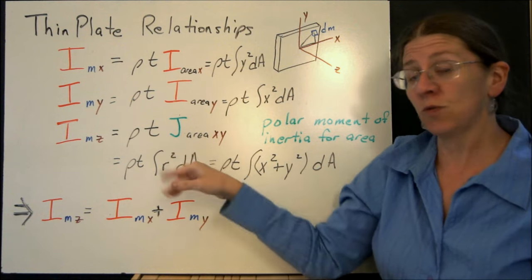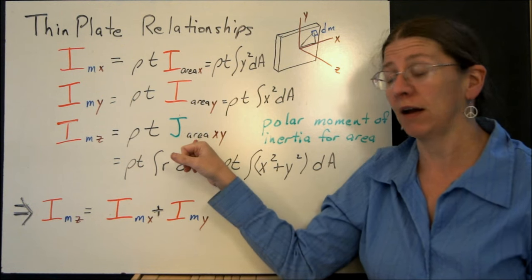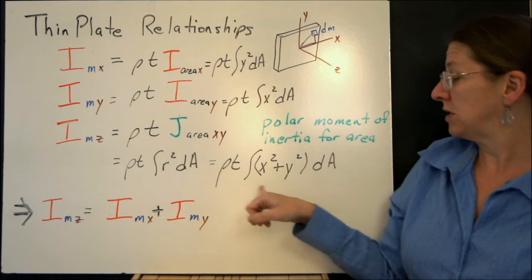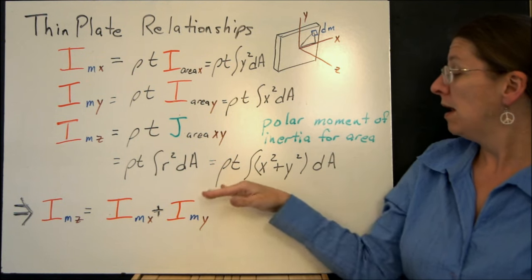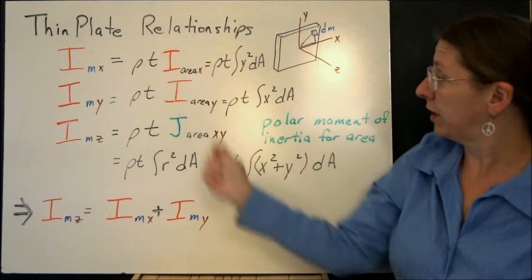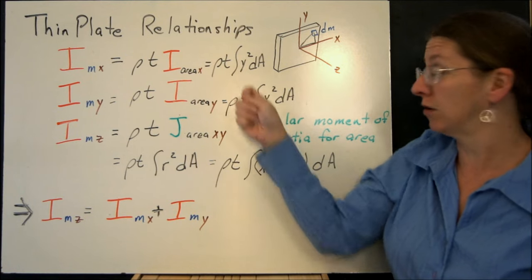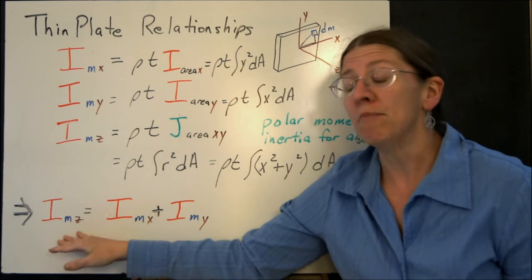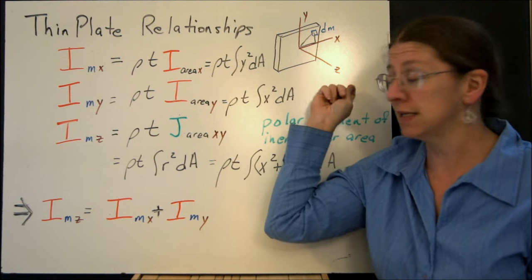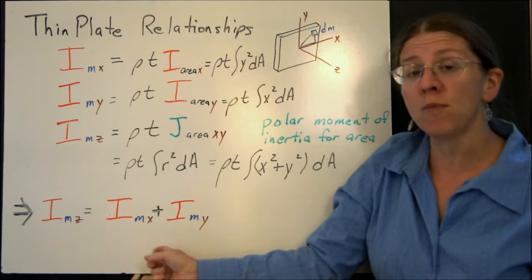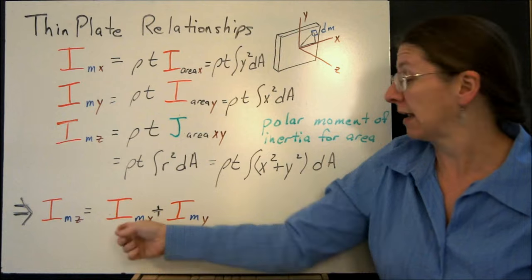Well, just like we did when we were dealing with polar moments of the area, what I have here is ρt times x² plus y², by the Pythagorean theorem of that little triangle up in there. Well, at this point, if you go right back through here, what you can say is, since this is the integral of y² and the integral of x², that the mass moment of inertia for a thin plate about that third axis, the z-axis, is the sum of the mass moments of inertia of the x and y-axis.